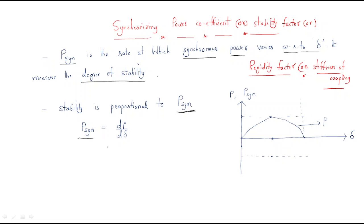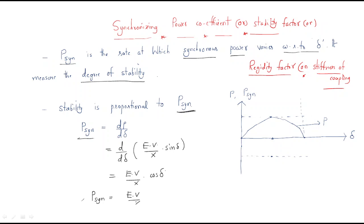The synchronizing power formula is dp/dδ. The power formula is (EV/X)·sinδ. Taking the derivative with respect to δ, sinδ becomes cosδ, so the synchronizing power equals (EV/X)·cosδ. This is the formula for the synchronizing power coefficient.